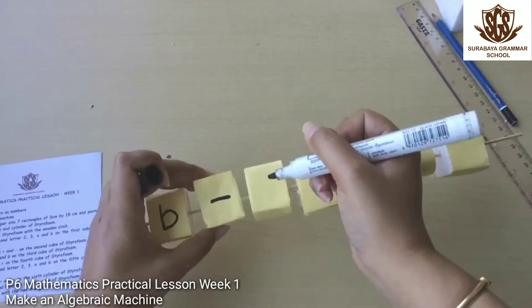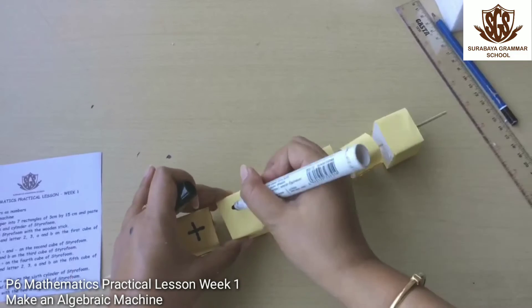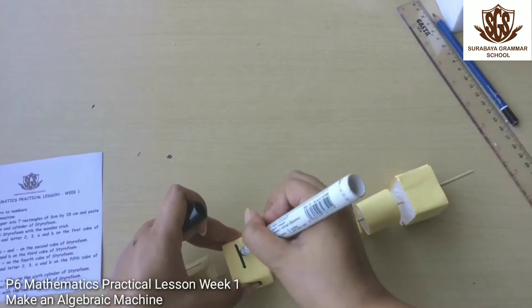Write operation plus and minus on the second cube of styrofoam. Write letter A and B on the third cube of styrofoam.